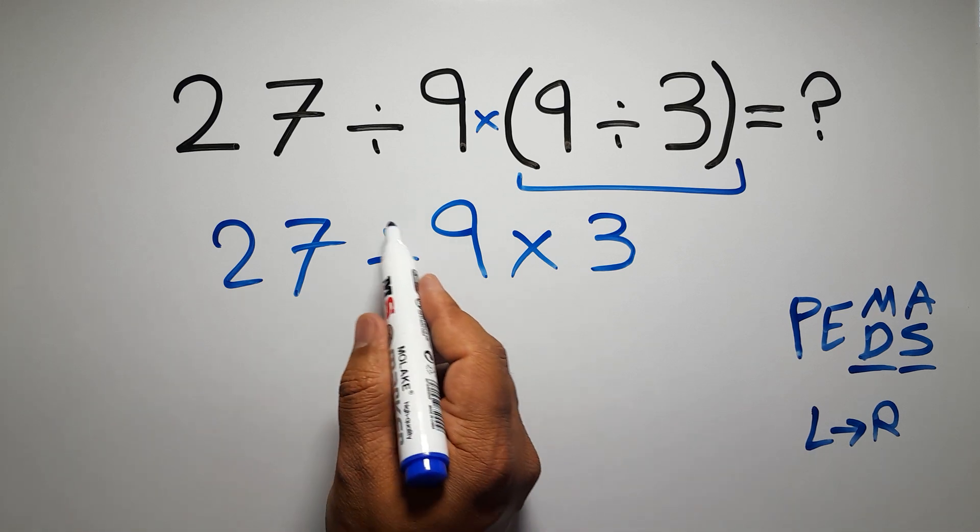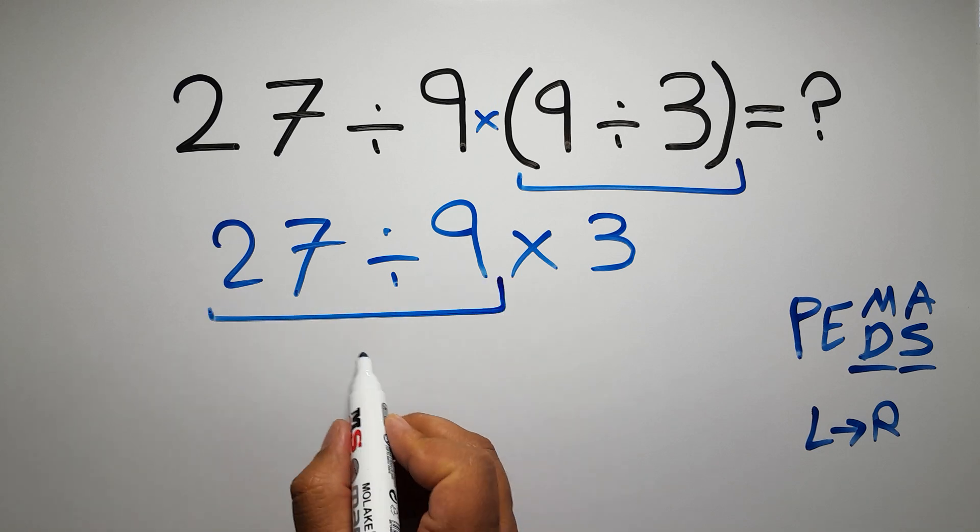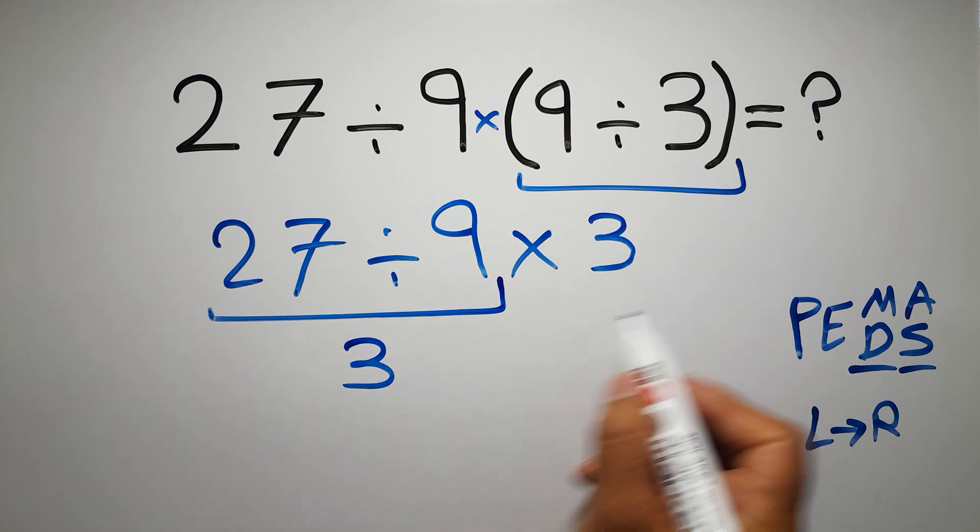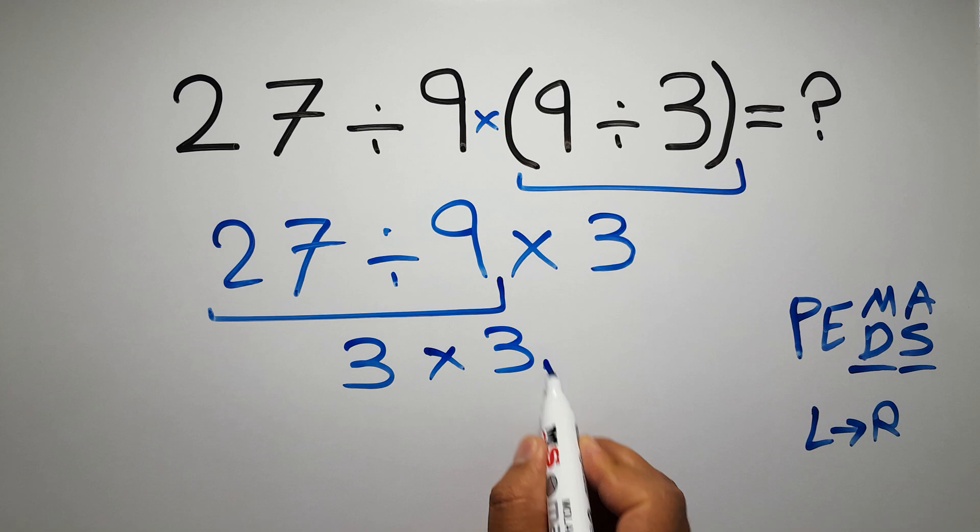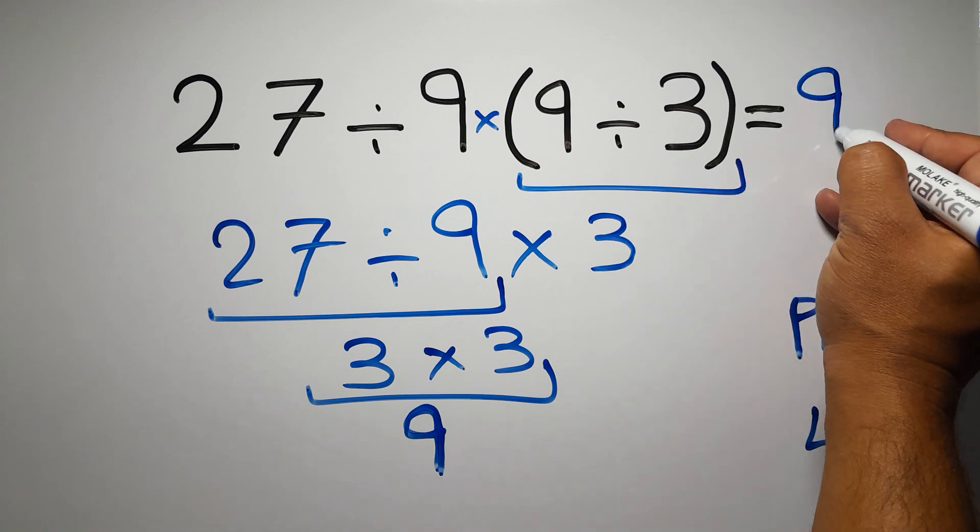So here, first we have to do this division. 27 divided by 9 gives us 3. So 3 times 3, which equals 9. And this is our final answer to this problem. The correct answer is 9.